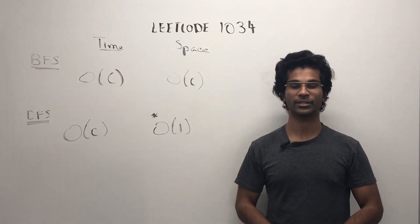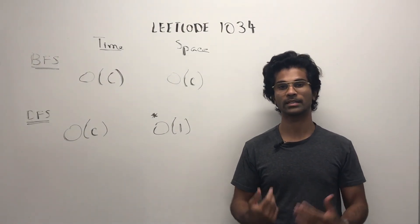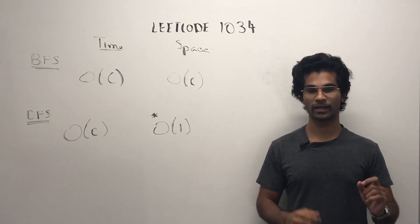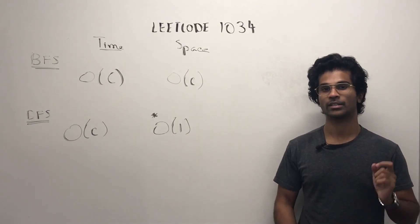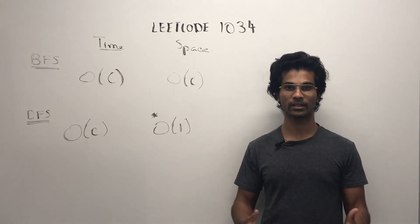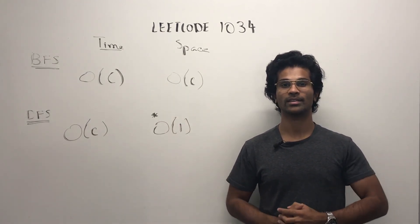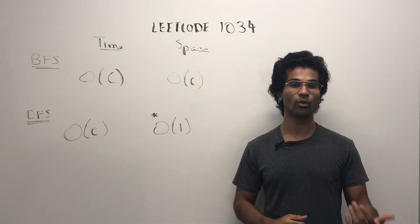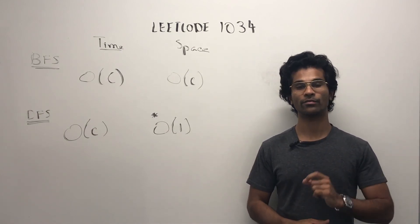The time complexity is going to be big O of C for both BFS and DFS. This is because we're visiting every node in the connected component. The space complexity for BFS is going to be big O of C, which is the size of the connected component because we're storing equal proportional to every visited node.